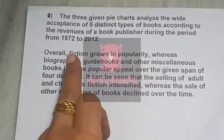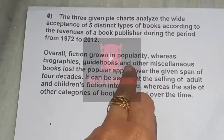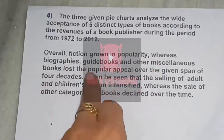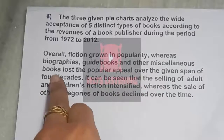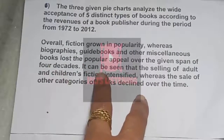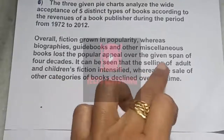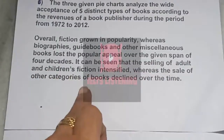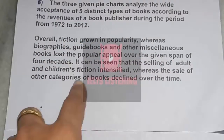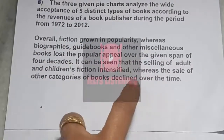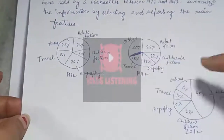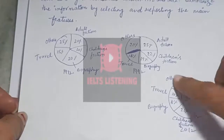Overall, fiction grew in popularity whereas biographies, guidebooks, and other miscellaneous books lost popular appeal over the given span of four decades. It can be seen that the selling of adult and children's fiction intensified — it increased — whereas the sale of other categories of books declined over the period.